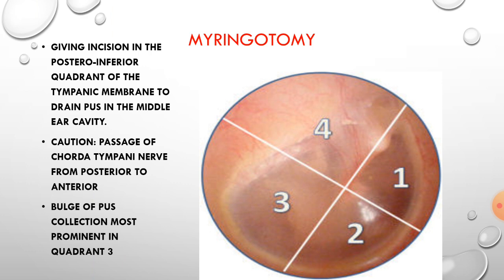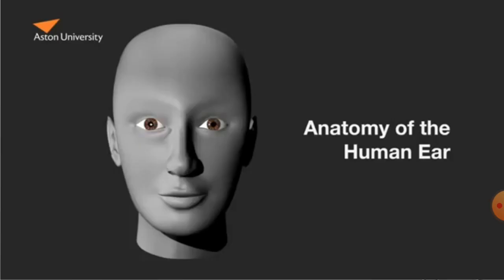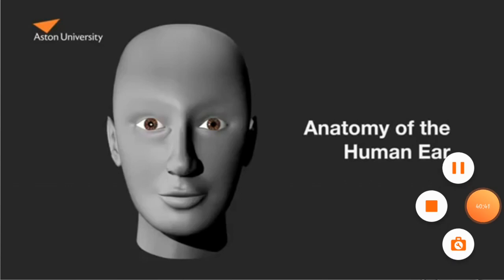Myringotomy is performed to drain inflammatory or suppurative conditions of the middle ear cavity. The incision is given in the postero-inferior quadrant of the tympanic membrane to drain pus, because the chorda tympani nerve passes from posterior to anterior behind the tympanic membrane — by incising in the postero-inferior quadrant we save that nerve. Thank you very much, and we're going to study the rest of the ear in the next class.